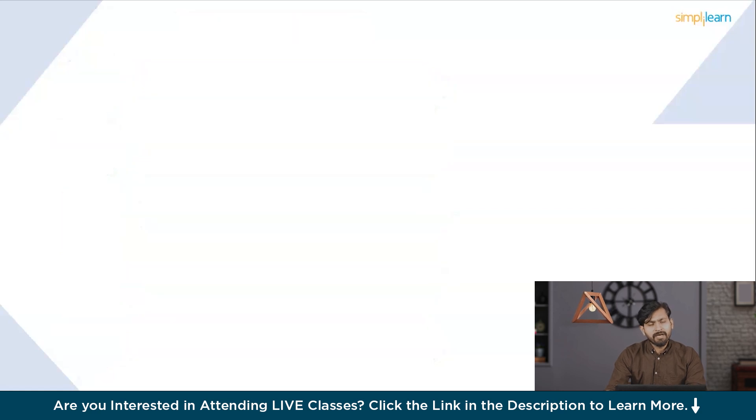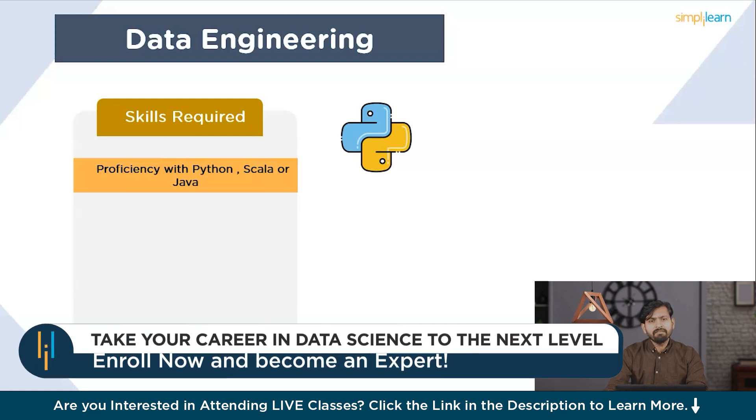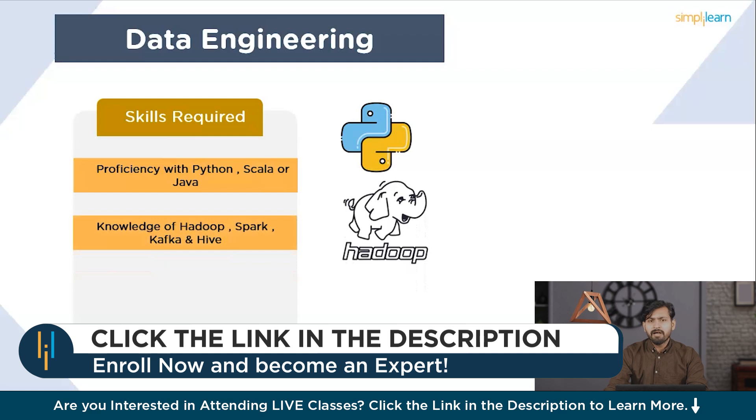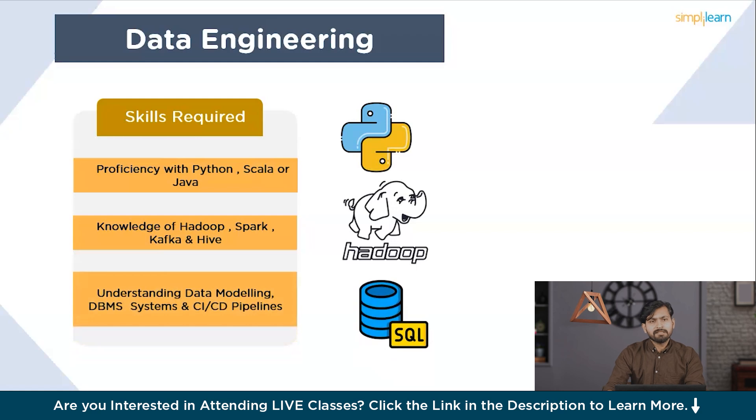What are the skill sets required to become a data engineer? To succeed as a data engineer, individuals need a strong foundation in programming languages like Python, Java, or Scala. Data engineers use these languages to develop data pipelines, automate tasks, and implement algorithms. They need expertise in big data technologies such as Hadoop, Spark, Kafka, and Hive, leveraging these frameworks to process and analyze large volumes of data efficiently. They use cloud platforms like AWS, Azure, or Google Cloud to deploy and manage data infrastructure. They're also involved in data modeling and database management systems, designing data models to organize and structure data effectively. Additionally, they implement DevOps practices for continuous integration and deployment to automate processes, monitor performance, and ensure reliability.